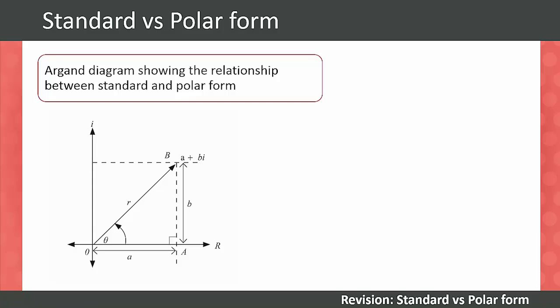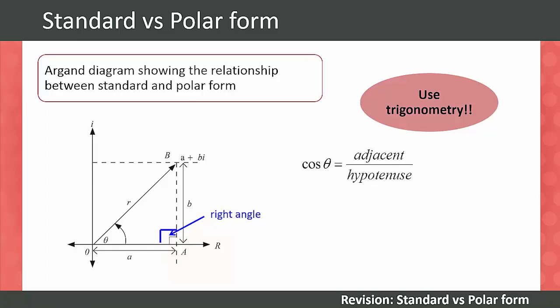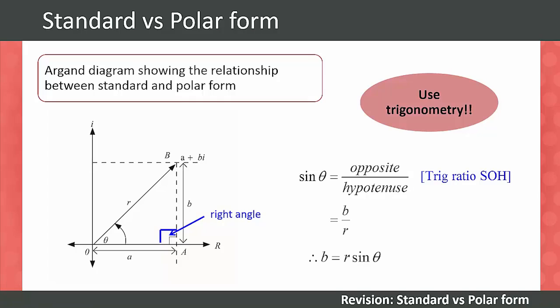So how do we derive the equation for the polar form? We use basic trigonometry. Notice the right angle triangle. Your students should remember that with right angle triangles we can use trig ratios to represent a complex number in terms of the angle theta. We have cos theta equals the adjacent over the hypotenuse, which comes from our trig ratio CAH. This gives us a divided by r, therefore a equals r cos theta. Then we can look at another trig ratio, sine theta, which is the opposite over the hypotenuse from SOH. This gives us b divided by r, therefore b equals r sin theta.